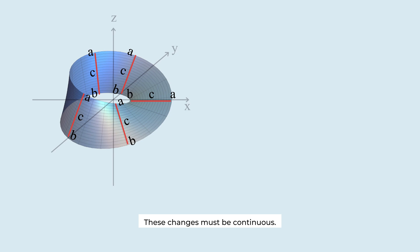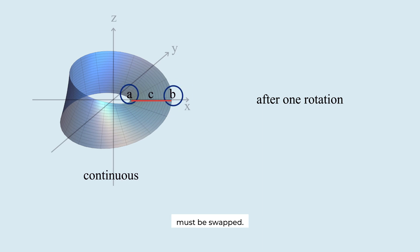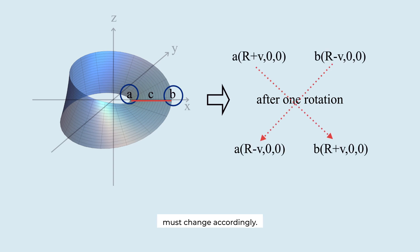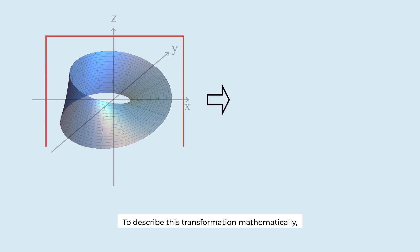These changes must be continuous. And after one full rotation, the positions of A and B must be swapped. At that time, the x-coordinate values of A and B must change accordingly. To describe this transformation mathematically, we need functions that have these properties.